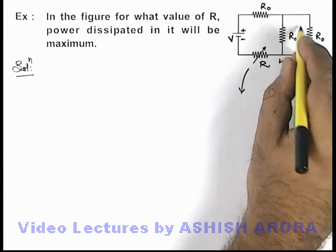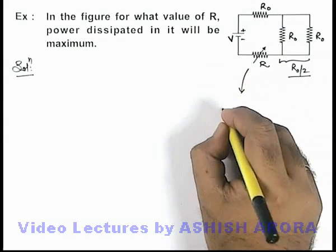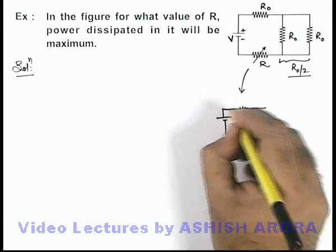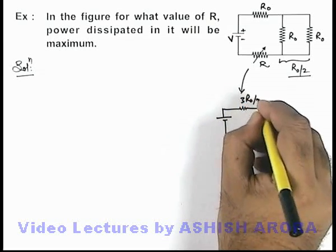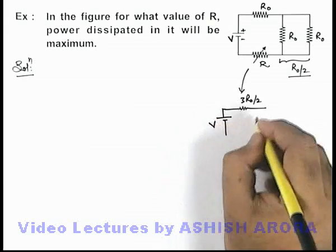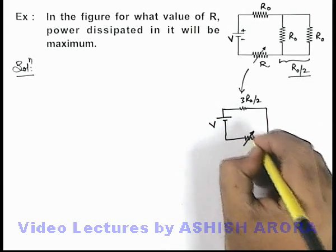And this R by 2 resistance can be taken in series with this R_not, so the resulting circuit will become like this. There is a resistance 3R_not by 2, we consider in series combination with the battery, along with the variable resistance of value R.